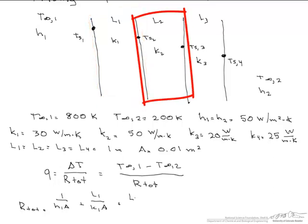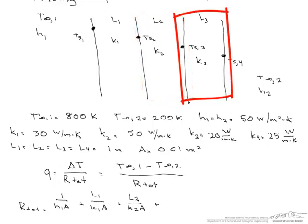Our second conductive resistance is L2 over K2A, and our third conductive resistance is L3 over K3A. We have three conductive resistances because we have three different materials with three different thermal conductivities.